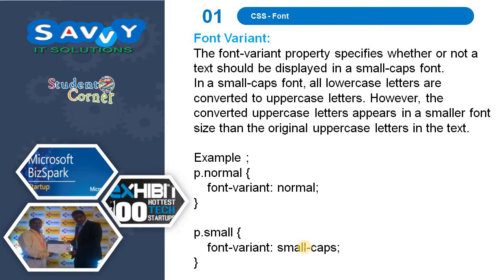Now font variant. The font-variant property specifies whether or not a text should be displayed in a small caps font. In a small caps font, all lowercase letters are converted to uppercase letters. However, the converted uppercase letters appear in a smaller font size than the original uppercase letters. So font-variant can be set to normal or small-caps, and we can change the fonts according to our requirements.